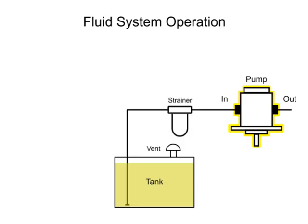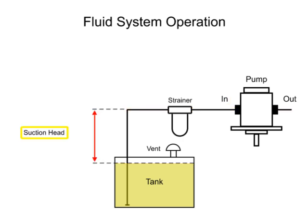If the pump is mounted higher than the reservoir, the height from the fluid surface to the pump inlet is called the suction head. If pump suction is used to elevate the fluid, suction head should be kept to a minimum to prevent generation of a vacuum effect on the pump inlet fluid.